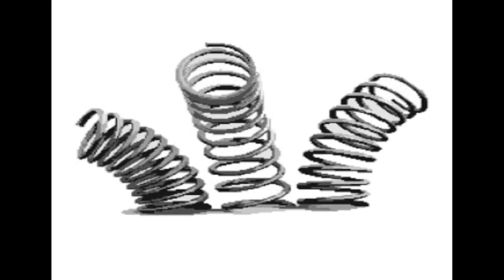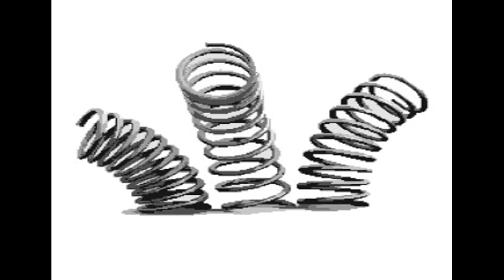A torsion spring is a spring that works by twisting. When it is twisted about its axis by an angle, it produces a torque proportional to the angle. A torsion spring's rate is in units of torque divided by angle, such as N·m/rad or ft·lbf/degree.